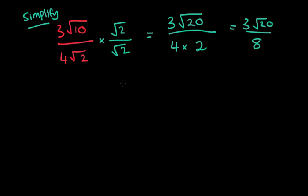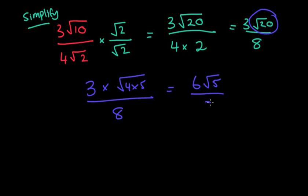That's not fully simplified because you might recognize that we have that root 20 that can actually be simplified smaller. That can be simplified as root 4 times root 5 all over 8, and that makes it 2 root 5. So 3 times 2 is 6 root 5 over 8.